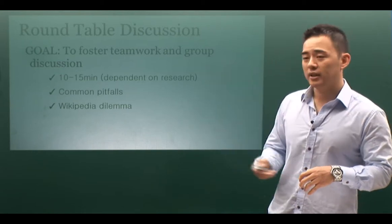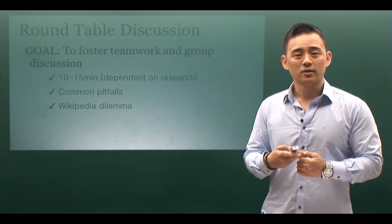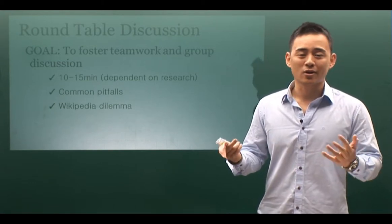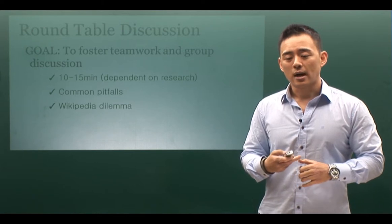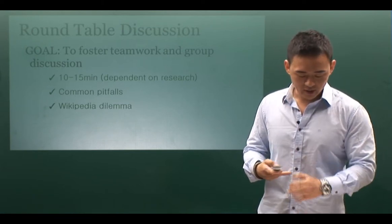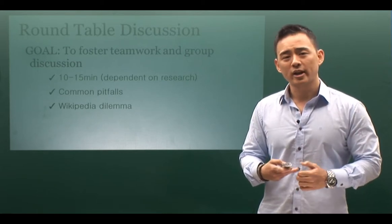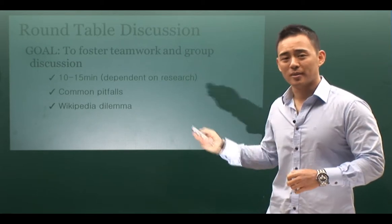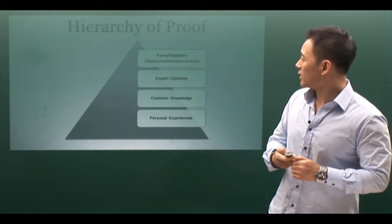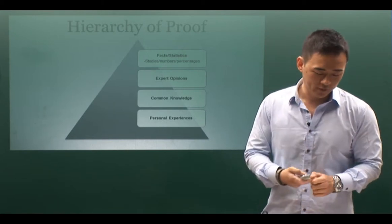For instance, Wikipedia — we always get into the dilemma of whether it's a trustworthy site. Remember, they're not grad students or college students, so I would say it's okay for the kids to start with Wikipedia, especially for more obscure debate topics. In talking about reliability, let's discuss something called the hierarchy of proof.